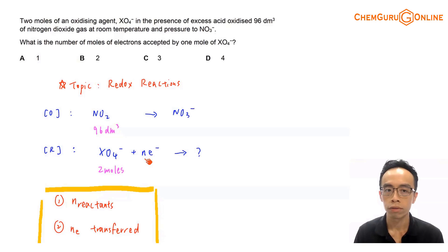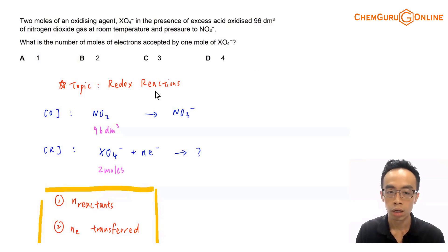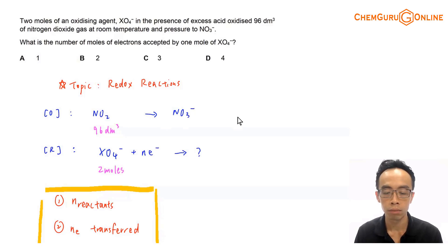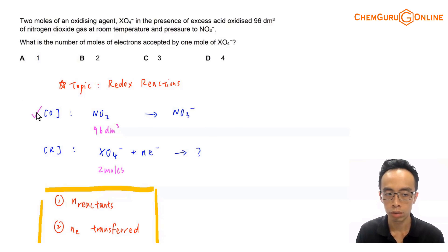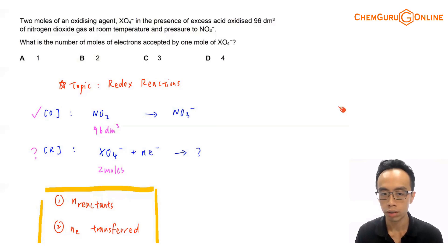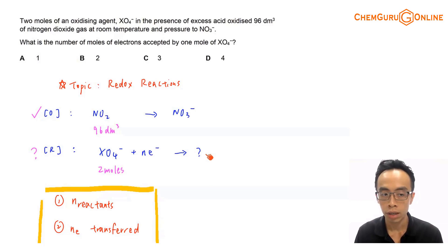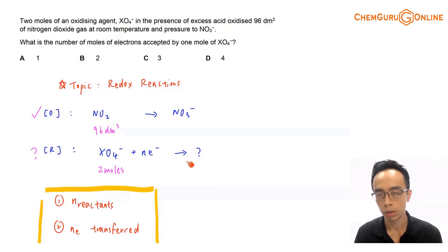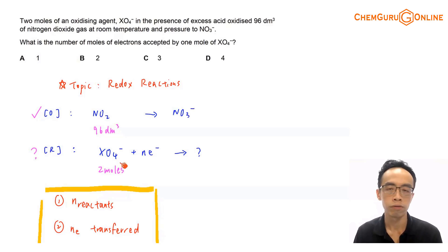Once we have this information, we actually have one half equation which is known. I can balance the oxidation half equation in acidic medium, so the oxidation half equation is known. The reduction half equation is unknown because we don't know what XO4⁻ is reduced to. The unknown we want to determine is the mole ratio of electron to XO4⁻.